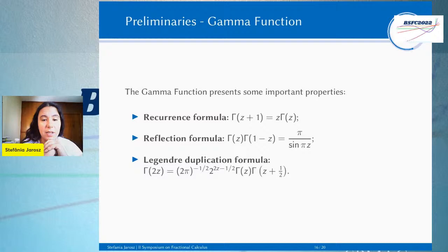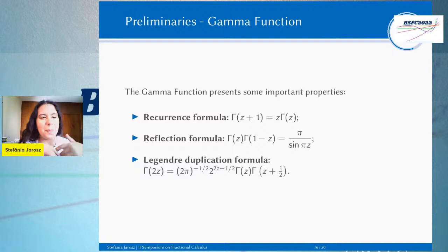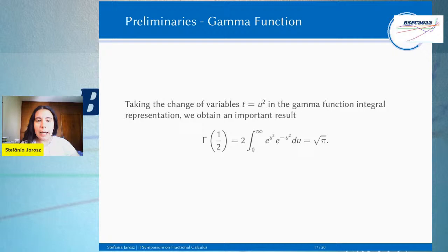Temos também a fórmula de reflexão — essa já é um pouco mais surpreendente: Γ(z) · Γ(1-z) = π / sen(πz). Eu fiz essa demonstração enquanto eu estava preparando a aula, e ela não é assim tão simples, mas é bem bonita. Temos também a fórmula da duplicação de Legendre, que já é uma fórmula um pouco mais complicadinha. Essas aqui são as identidades mais importantes da função gama a princípio.